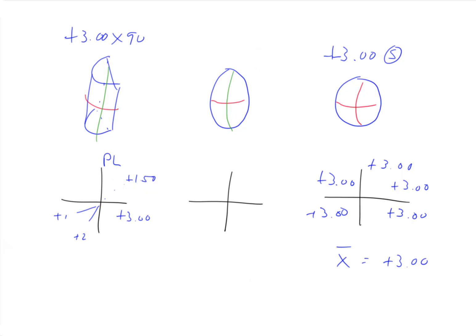All right, so now let's look at the Toric lens in the middle. So now what we have is, let's say we have power plus three this way, and a power of plus two this way.